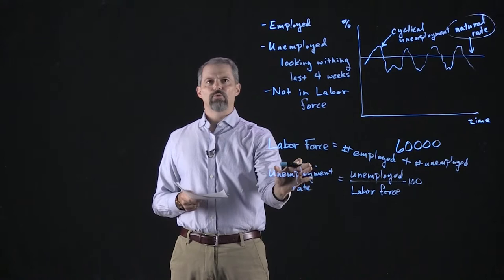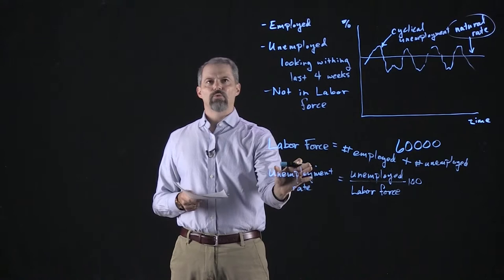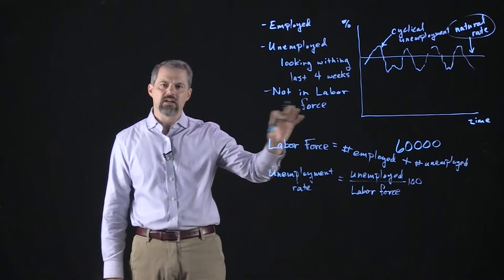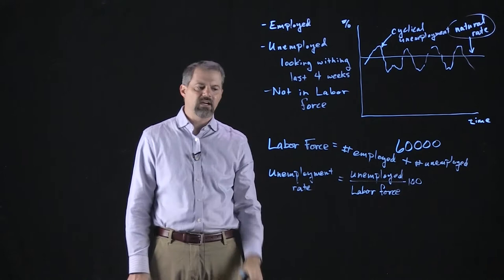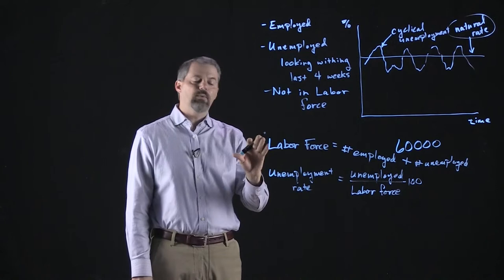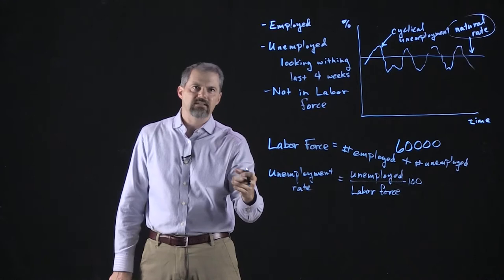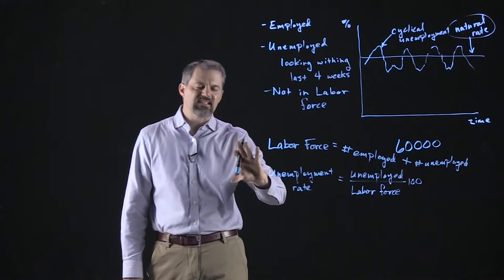The Bureau of Labor Statistics calculates the unemployment rate for different subgroups of the population: the overall rate across all workers, the rate for people in a particular state or region, based upon race, based upon age — for example, people 18 to 24. The Bureau of Labor Statistics calculates a whole bunch of different unemployment rates for subcategories of the population.